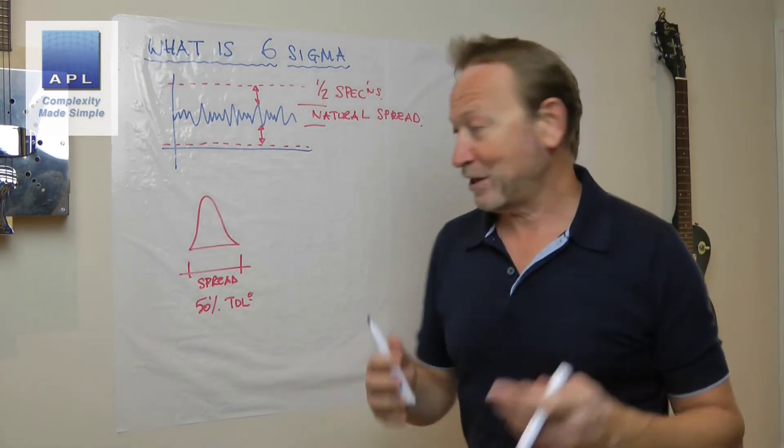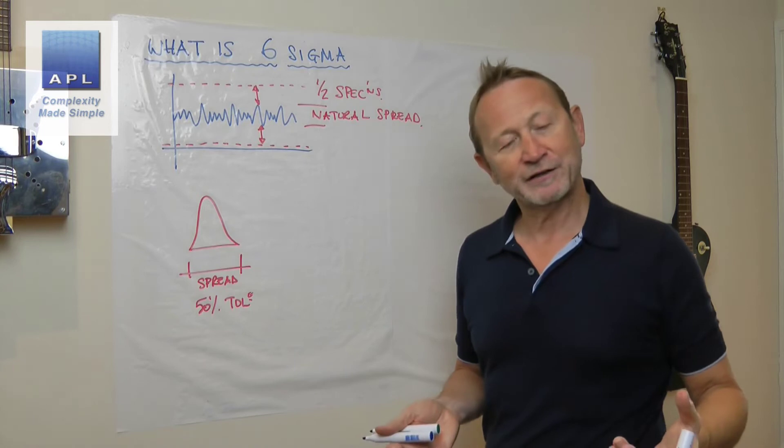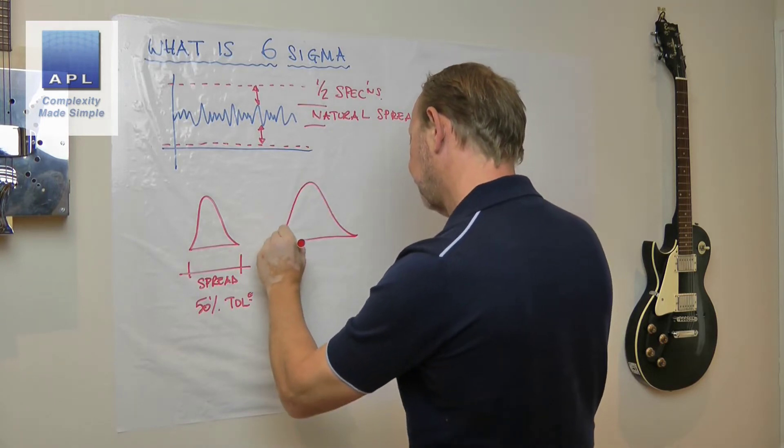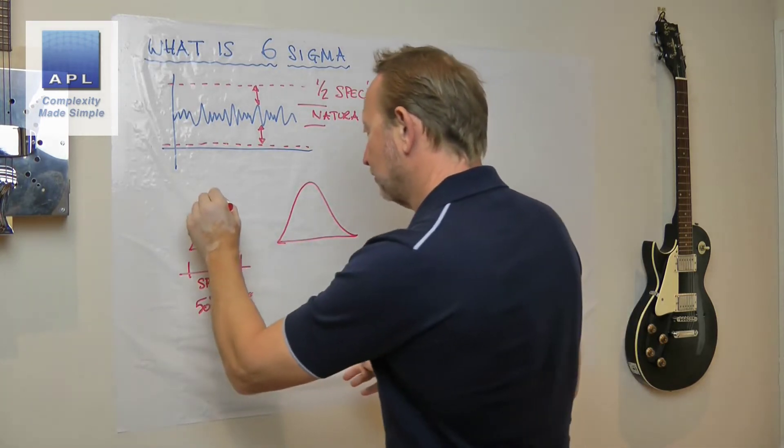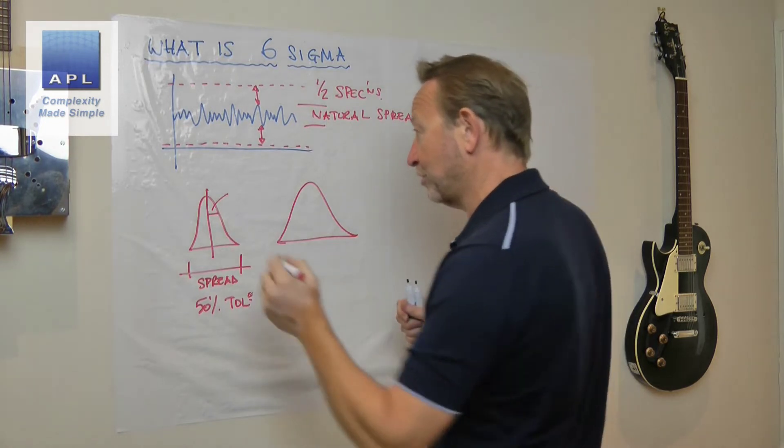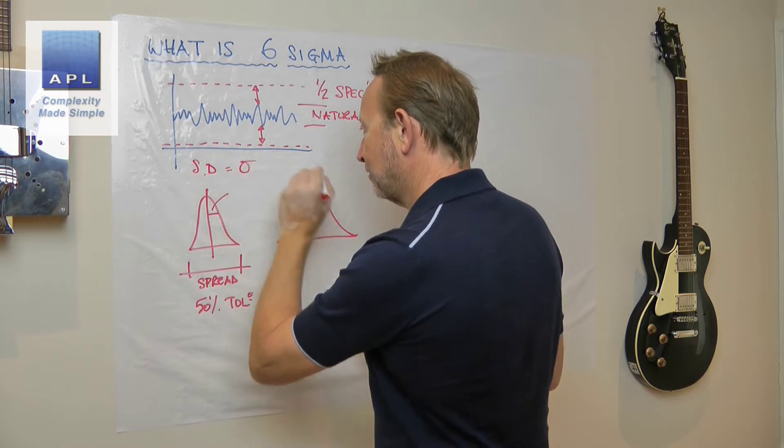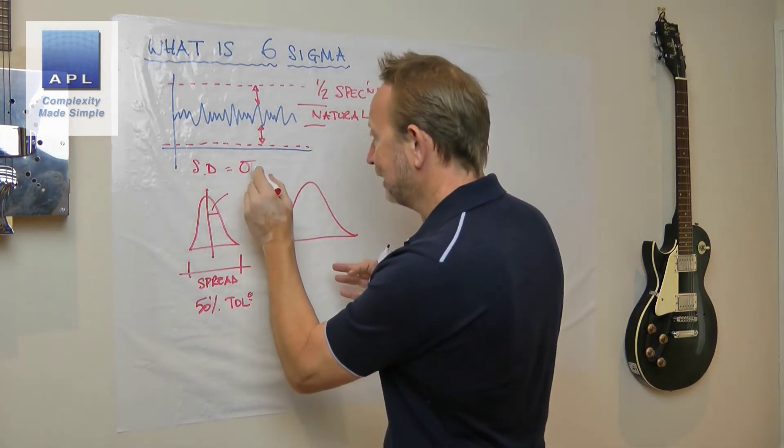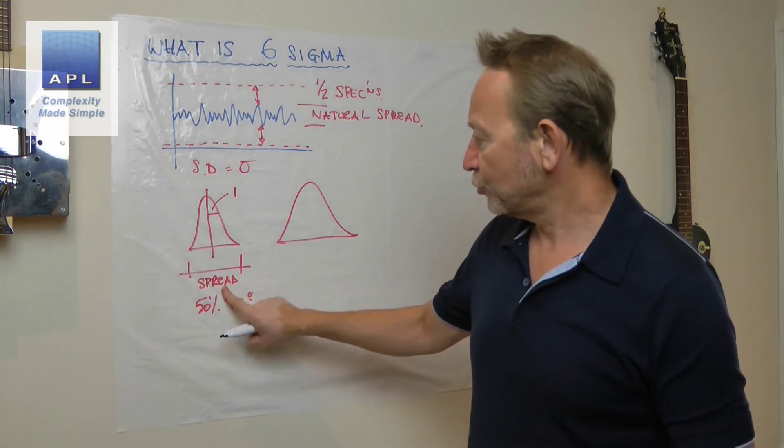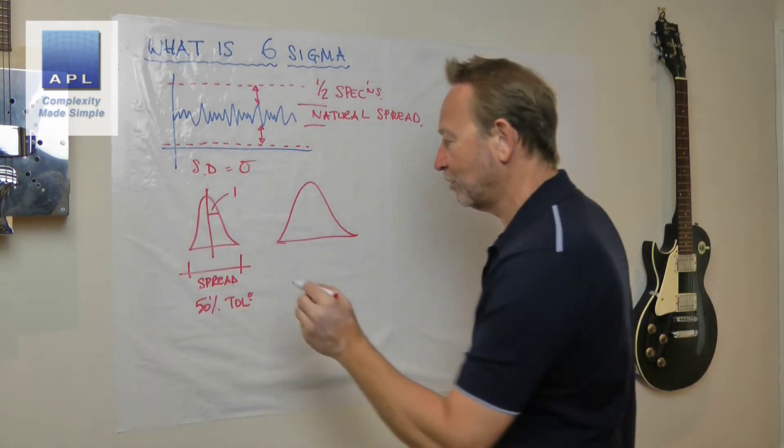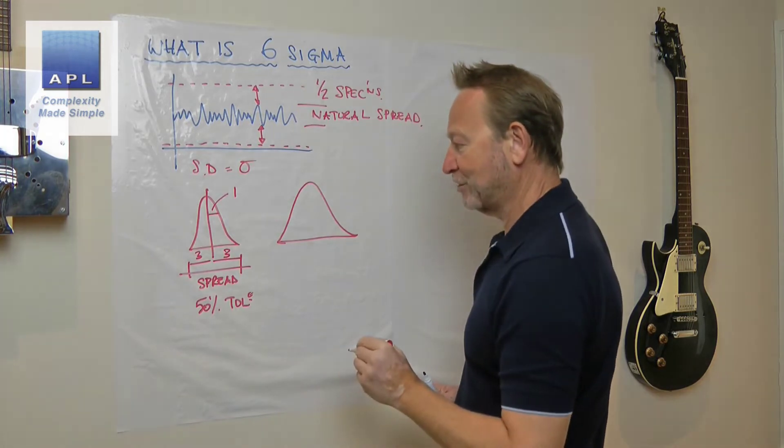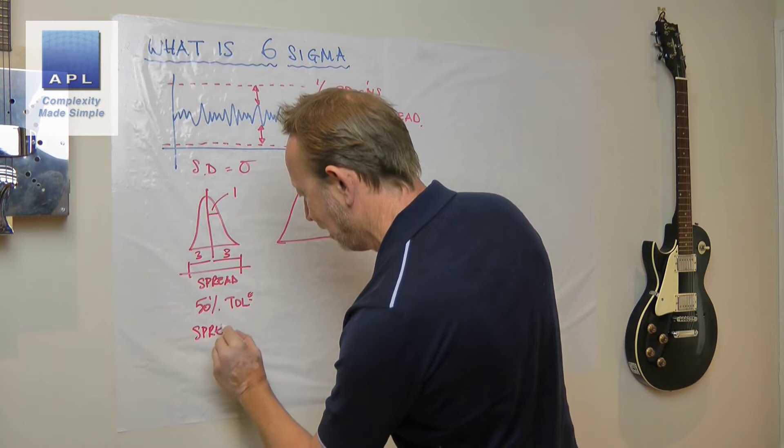Where does the Sigma come from? Well, Sigma is a measure of spread. It tells you how wide this thing is. Let's say this one here—if I work out standard deviation, which is what Sigma is, so standard deviation is where Sigma comes from because the Greek letter means standard deviation. If we had a standard deviation of one here, the spread of the results would be three in that direction and three standard deviations in that direction. So this would have a spread, a range of six.